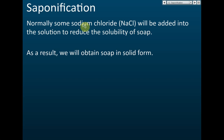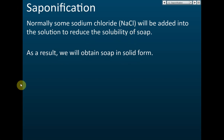After heating cooking oil with sodium hydroxide or potassium hydroxide for 20 to 30 minutes, you get soap in liquid form. If you want solid soap, you add sodium chloride. Sodium chloride reduces the solubility of the soap, causing it to solidify. The function of sodium chloride is to reduce the solubility of soap so that it forms solid soap.